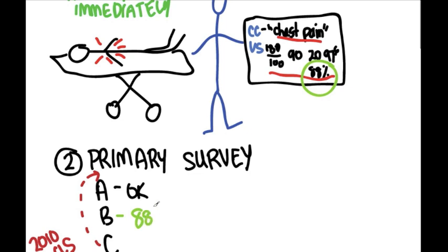So we make an immediate intervention. Maybe in this case, we'll apply two liters of nasal cannula oxygen and then reassess later.